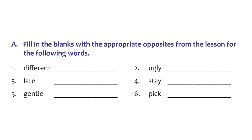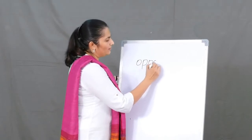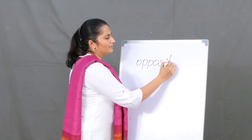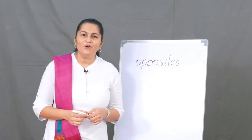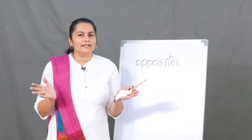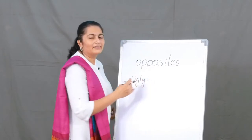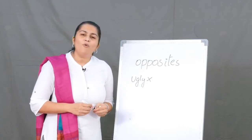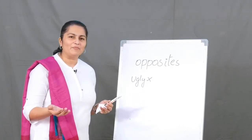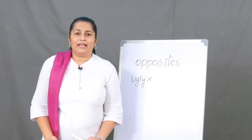The next exercise is to fill in the blanks with appropriate opposites from the lesson. What are opposites? Opposites are words that contradict each other. For example, 'ugly' — the opposite is 'beautiful'; 'small' — the opposite would be 'big'. These words contradict each other. Let's go ahead and do some of those in the exercise given.